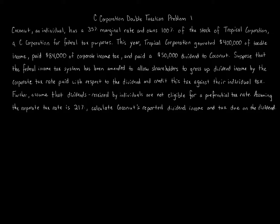Suppose that the federal income tax system has been amended to allow shareholders to gross up dividend income by the corporate tax rate paid with respect to the dividend and credit this tax against their individual tax. Further, assume that dividends received by individuals are not eligible for a preferential tax rate. Assuming that the corporate tax rate is 21%, calculate Coconut's reported dividend income and tax due on the dividend.